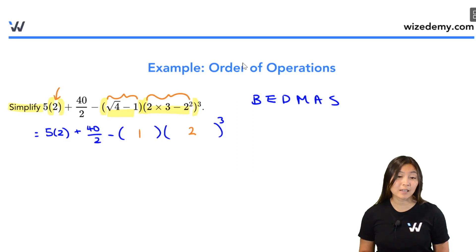So hopefully you were able to give that a try. Your final number should be 1 for the first bracket, 2 for the second one. How did we get that? Well, in the first bracket, remember, square roots belong to exponents. They're in the same group. So we're going to deal with square roots before we deal with the subtraction. So the square root of 4 is 2. 2 minus 1. That's how we got this 1 over here.